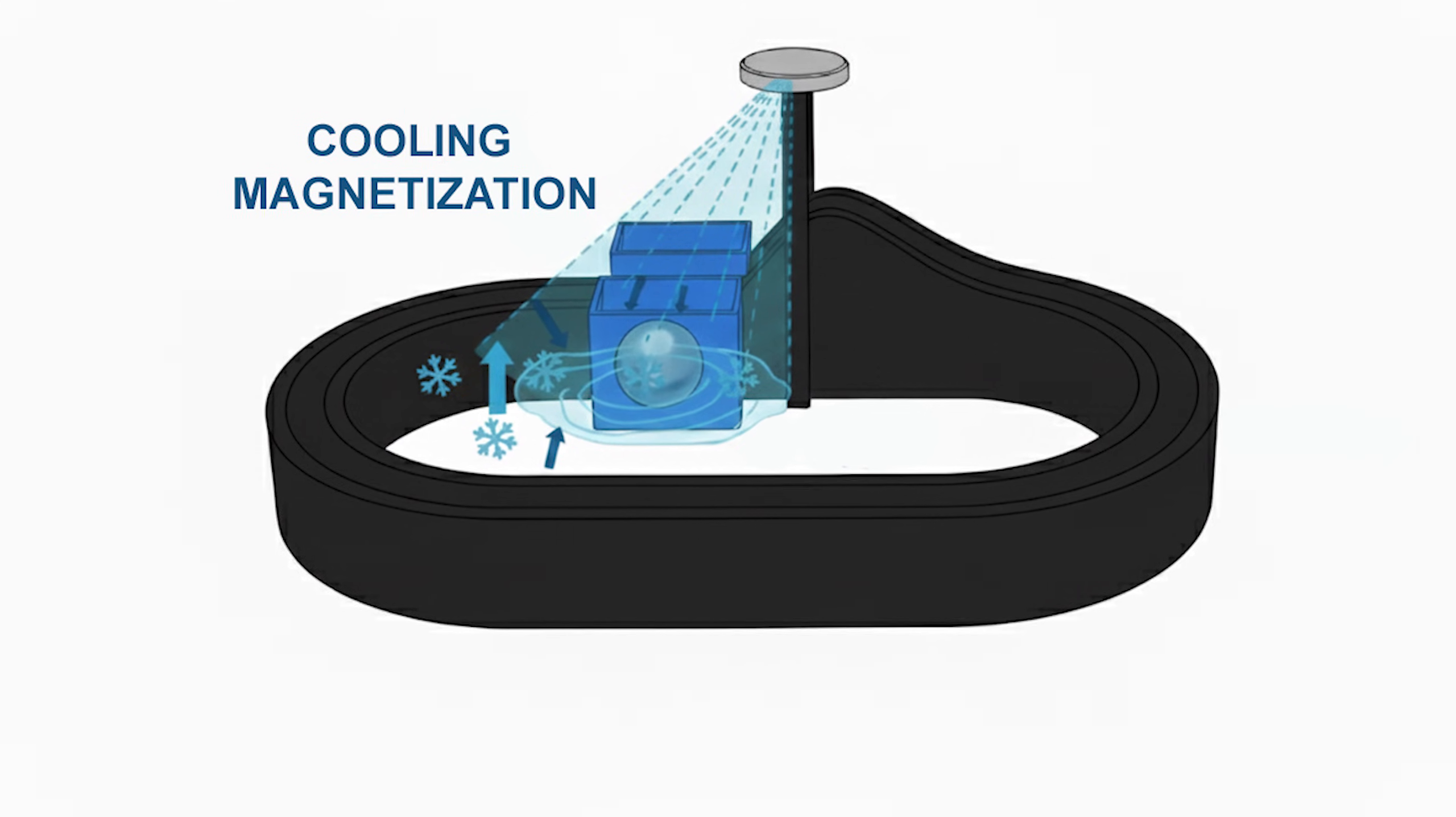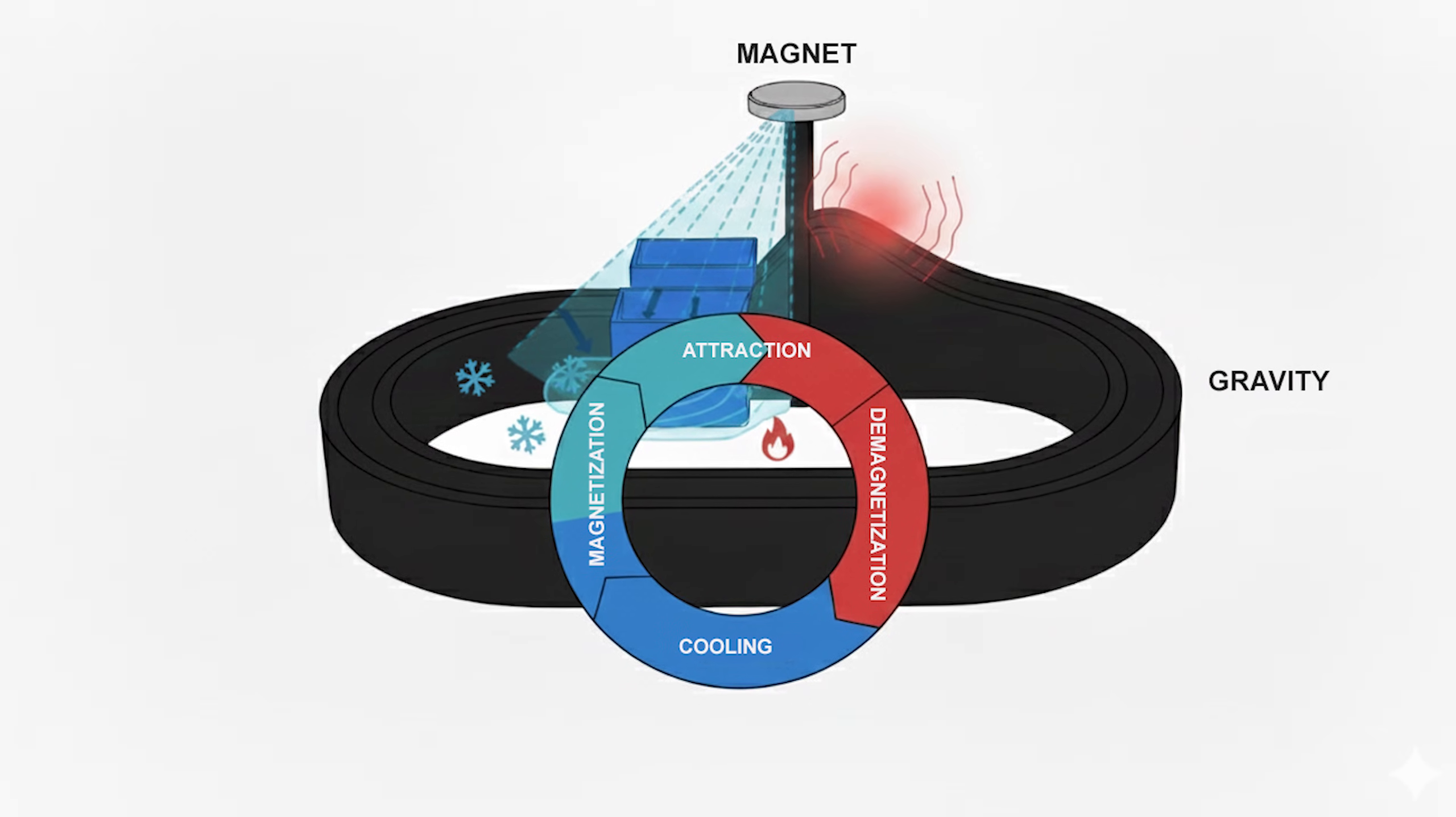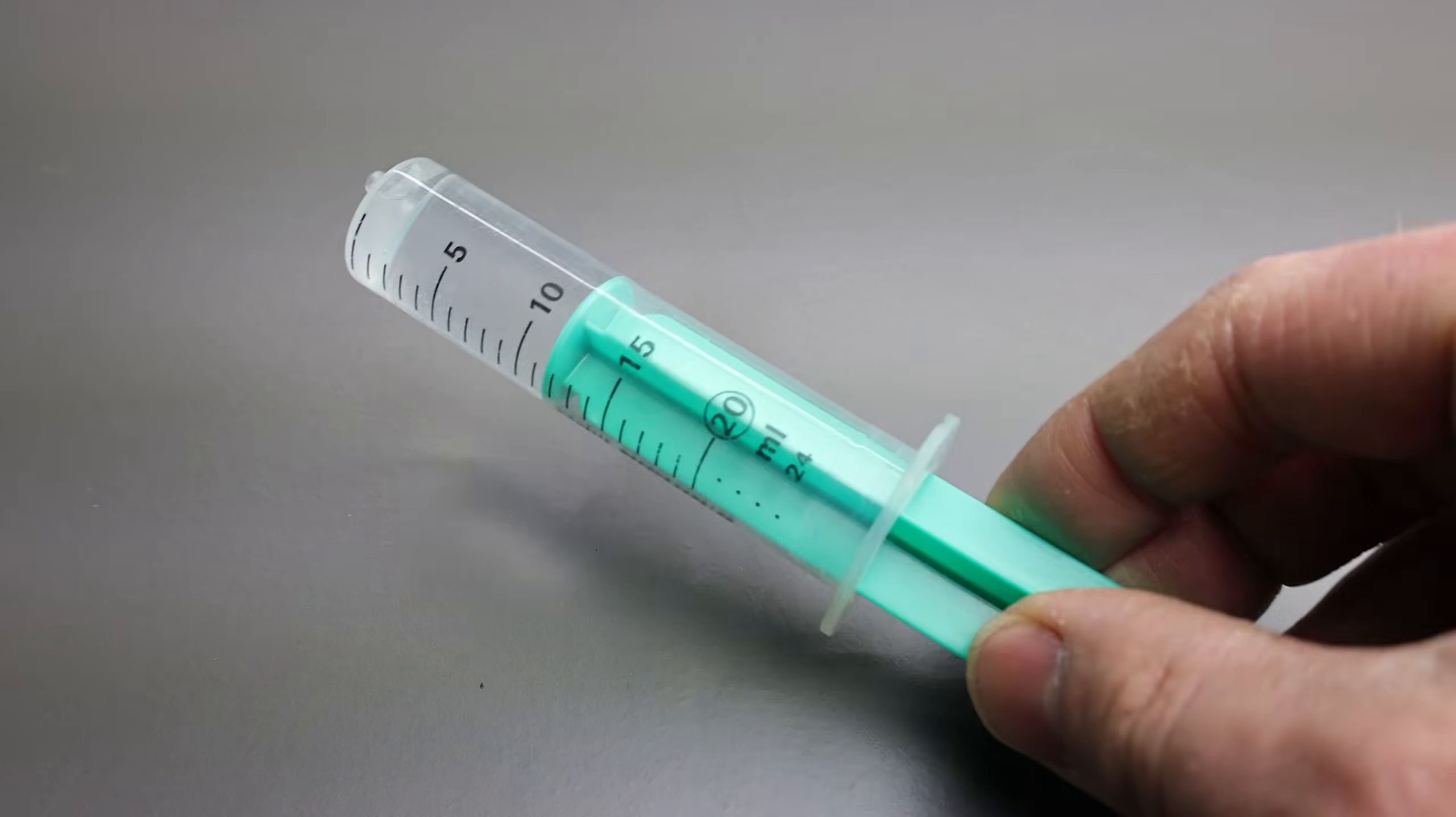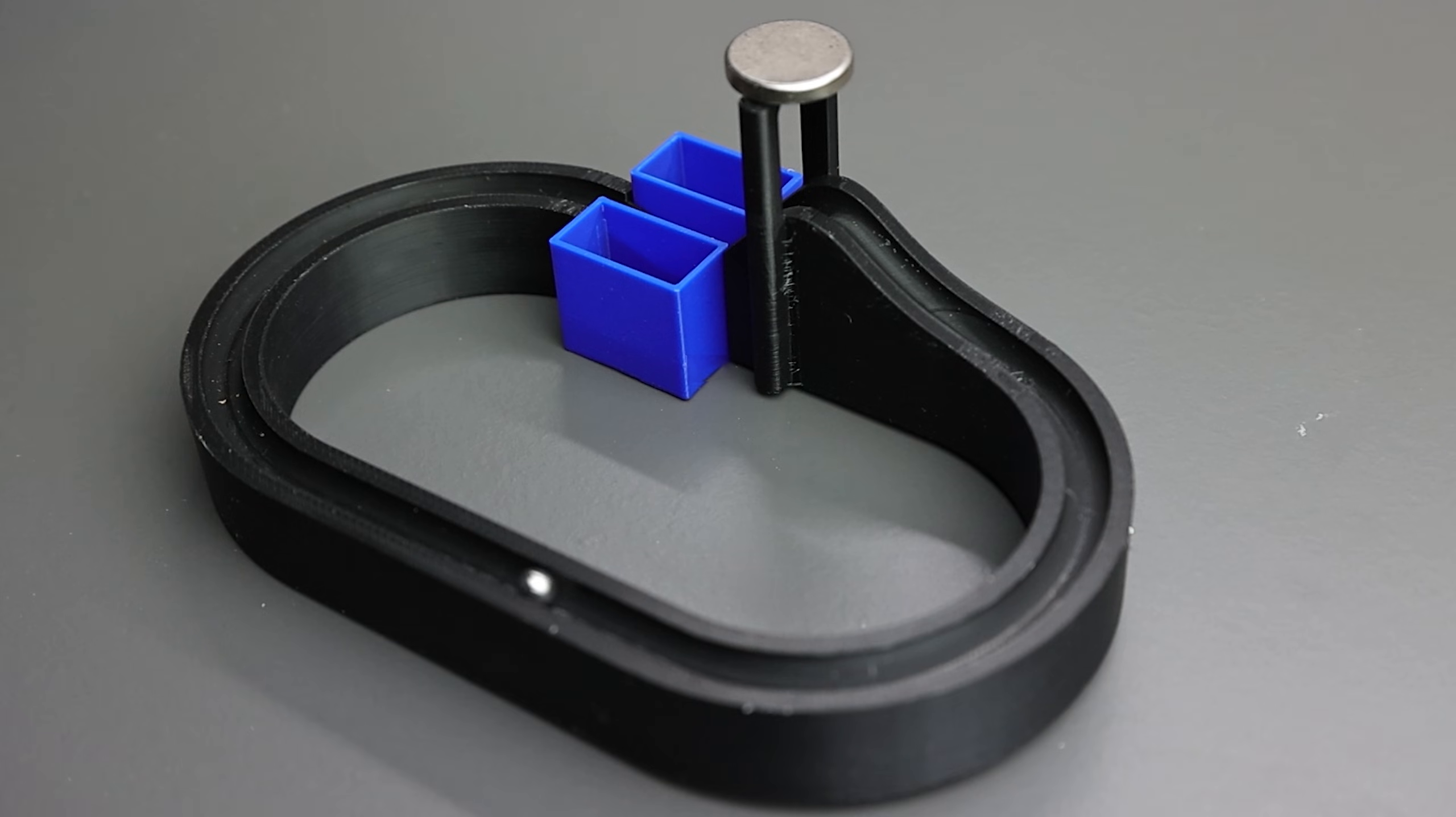Technically, what you are seeing is a classic heat engine, operating on a very small temperature delta. The room acts as the high-temperature reservoir, providing the energy, and the water acts as the low-temperature sink. It's a beautiful demonstration of energy harvesting. While it may look like a perpetual motion machine, it's actually a harvester, pulling microscopic amounts of energy from the environment and turning it into macroscopic motion.